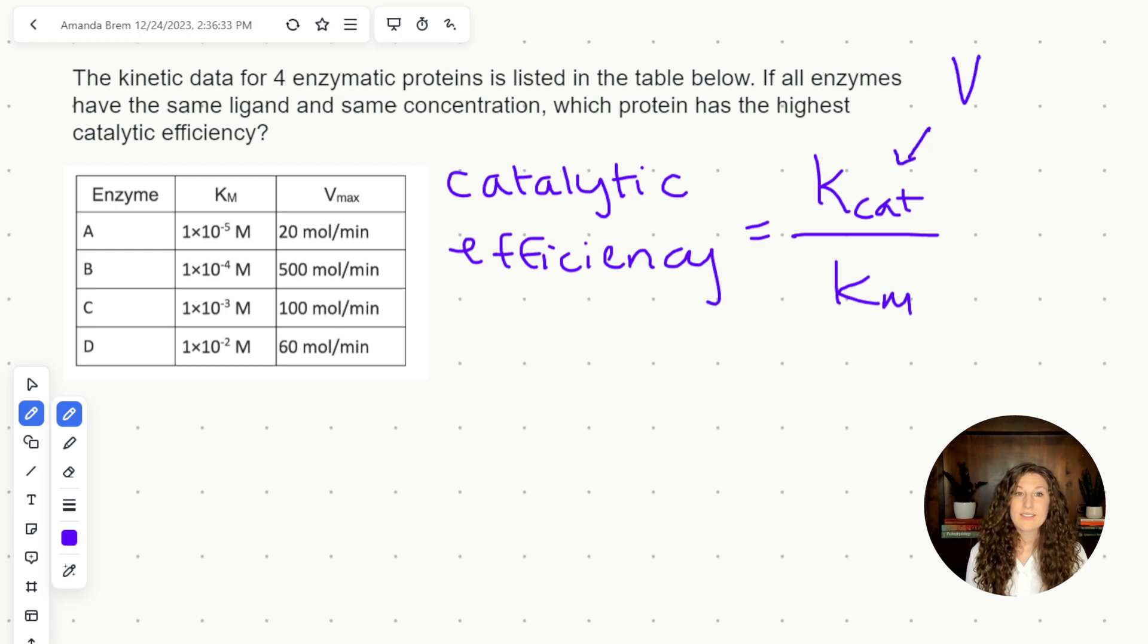Kcat is Vmax over enzyme concentration. So Vmax is on the numerator, enzyme concentration is on the denominator. Now we were told that we have the same concentration across all four enzymes, so we're not going to need to really worry about enzyme concentration because that value is going to be the same. So now we have Vmax on the numerator and Km on the denominator, and we're asked for the highest catalytic efficiency. So we're looking for the enzyme with the highest Vmax and the lowest Km, and that's going to be our most effective enzyme.